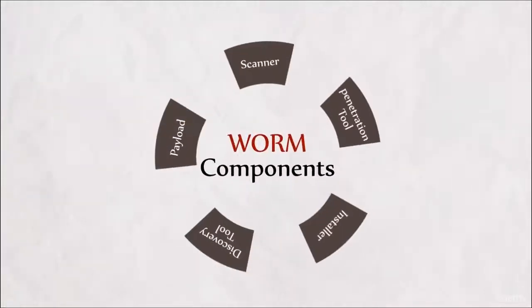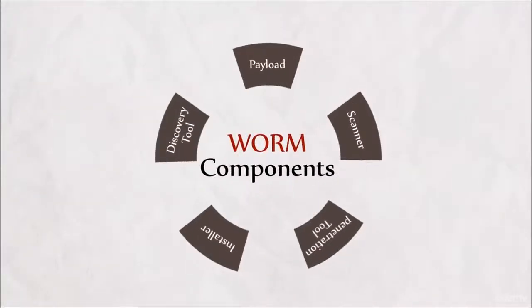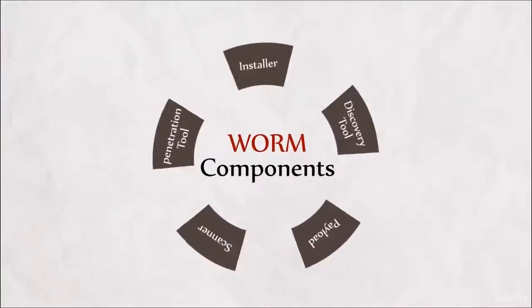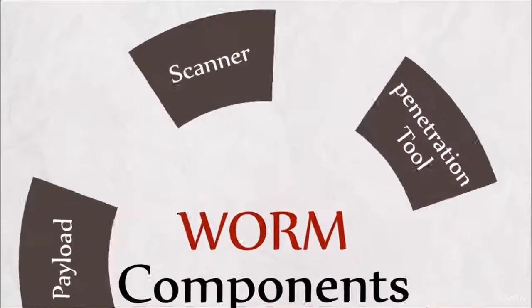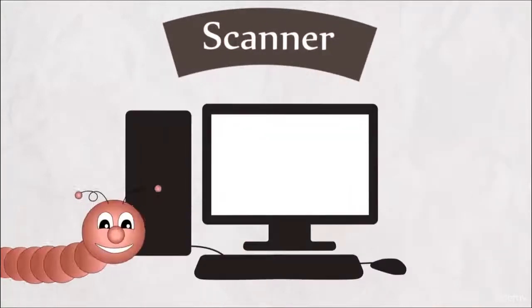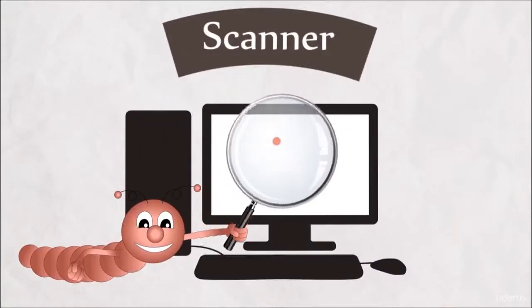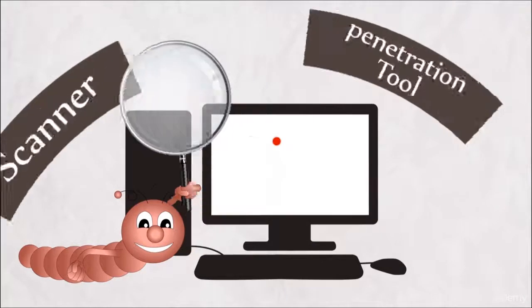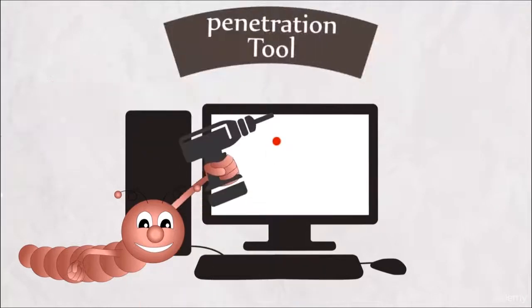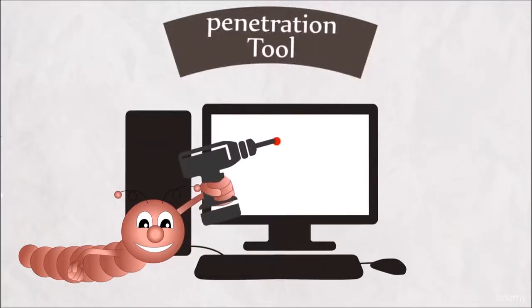In order to implement its malicious intent, a worm comprises of the following components. The first component is the Scanner, which looks for vulnerabilities in the victim's system. Once a vulnerability is found, the second component, the Penetration Tool, is used to exploit this vulnerability.